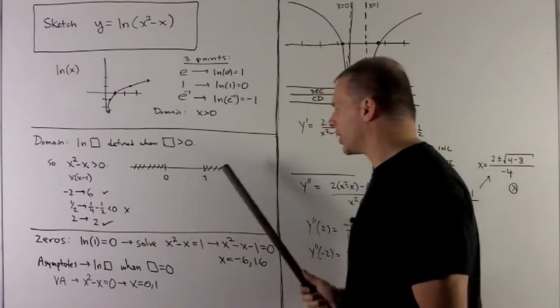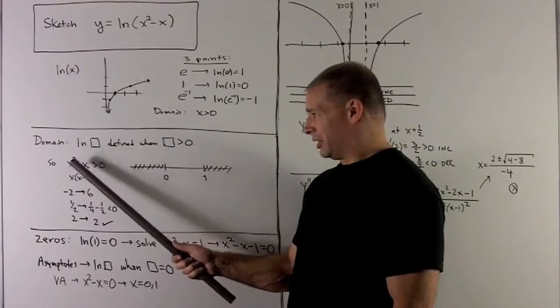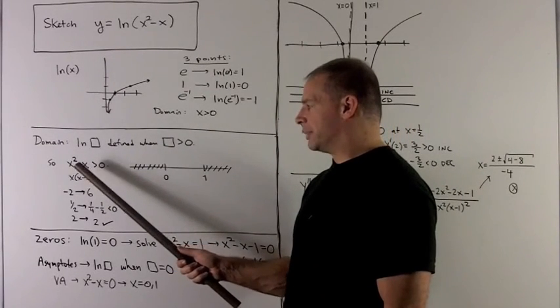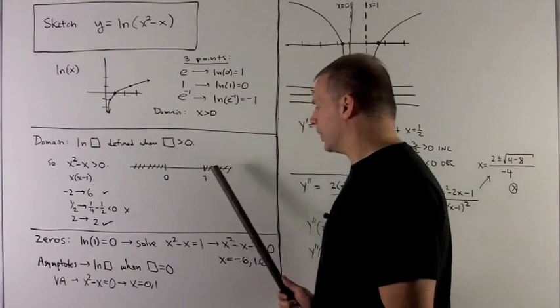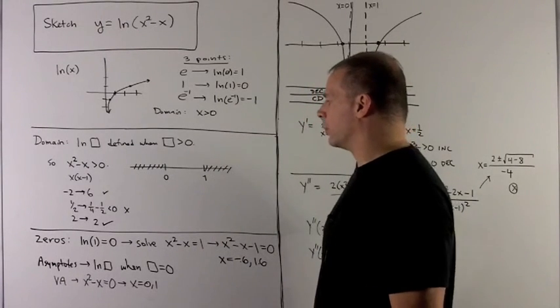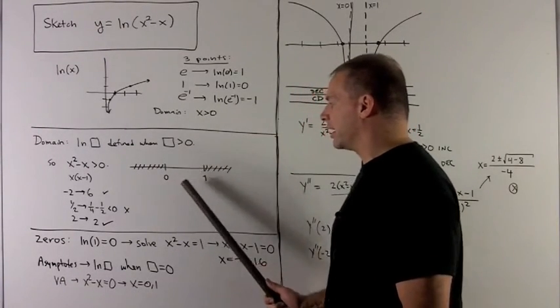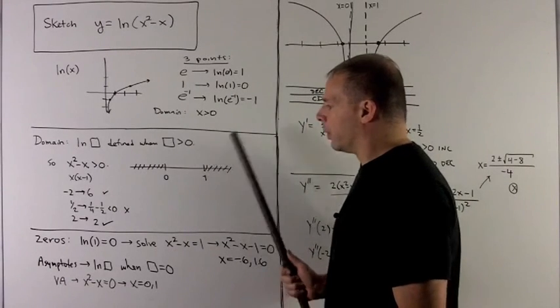Finally, I take 2 to check the last region. 2 squared minus 2 gives me 2, which is positive. So we can take the region x bigger than 1. So our domain is everything except that hole from 0 to 1.